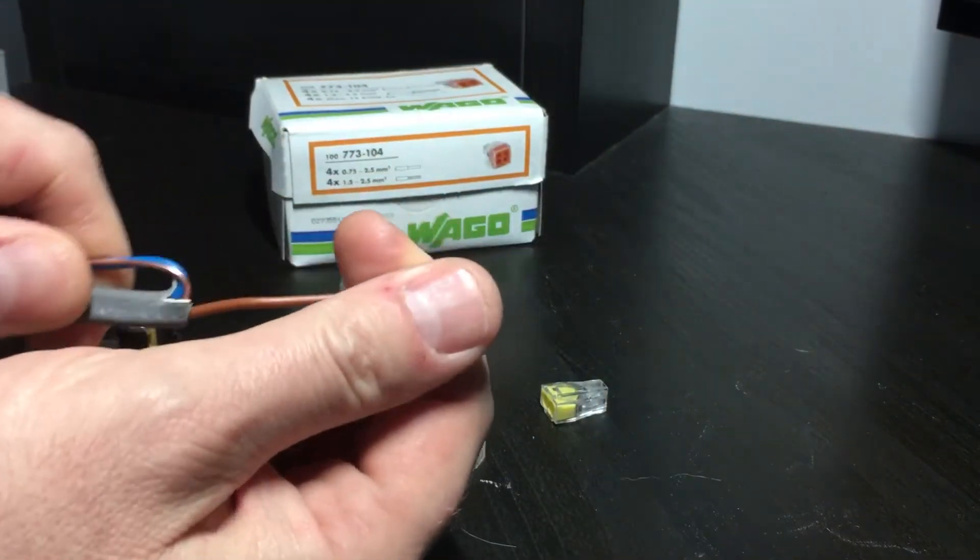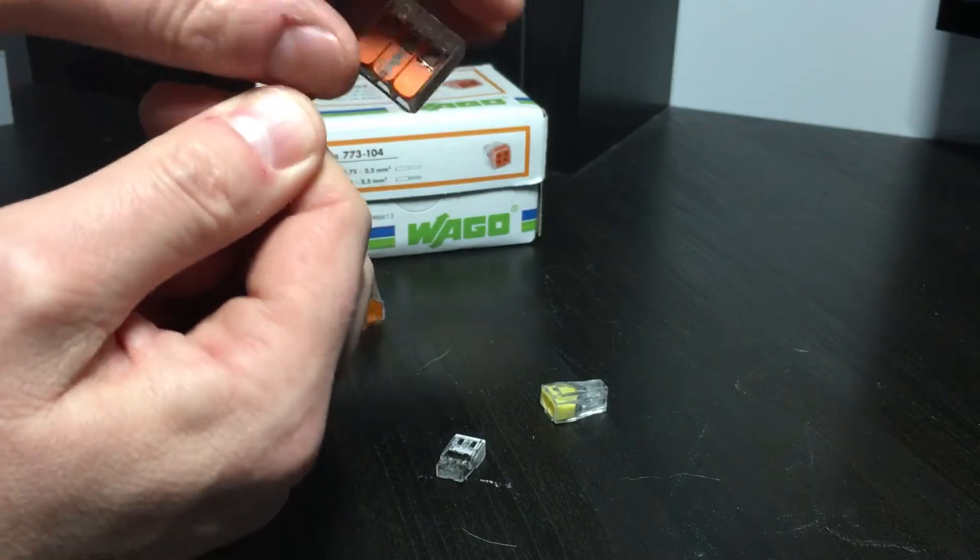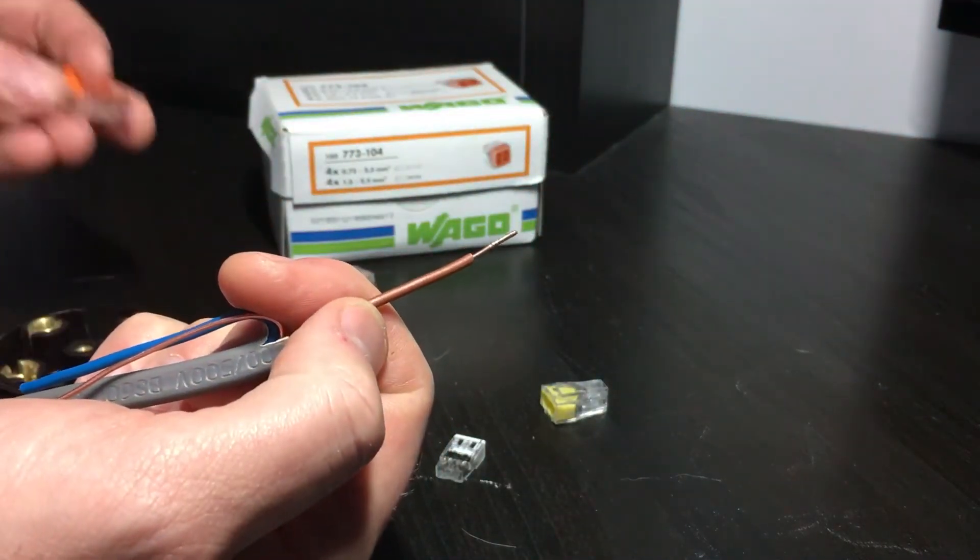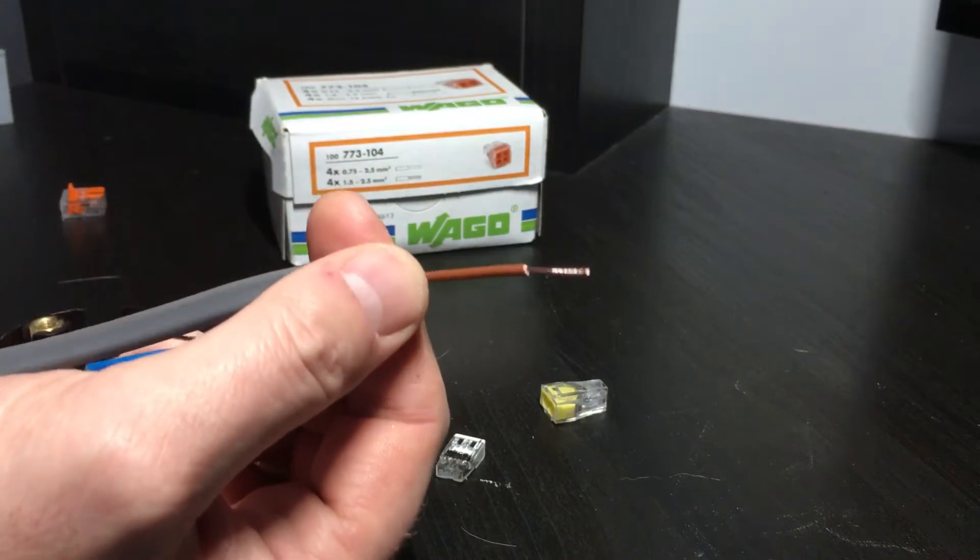With the WAGO unit, it's one port, one cable. It's a snag eliminator, and the ease of installation makes for a very quick job indeed.